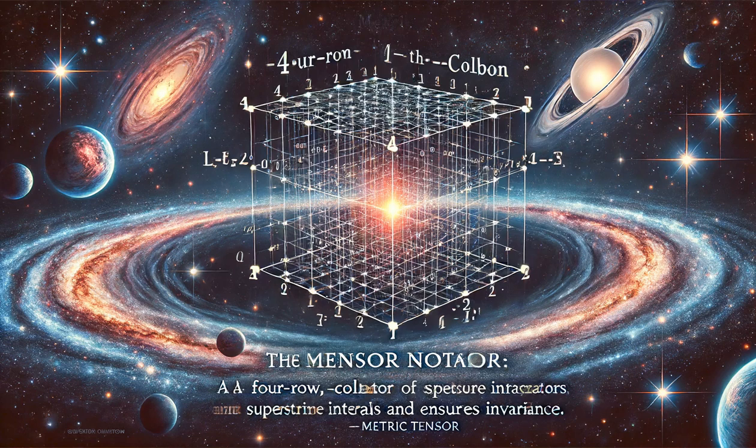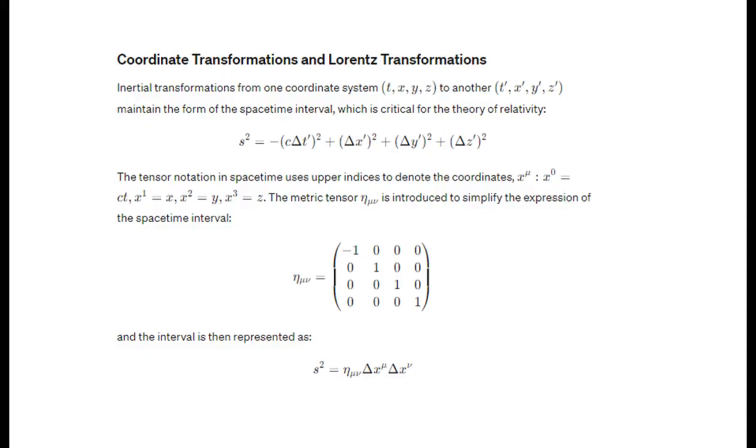To simplify the expression of spacetime intervals, a four-row, four-column matrix called the metric tensor is introduced. This tensor helps manage the combination of spatial and temporal components and ensures that the interval remains invariant. The metric tensor operates on its indices, allowing for efficient computation of invariant quantities in spacetime.